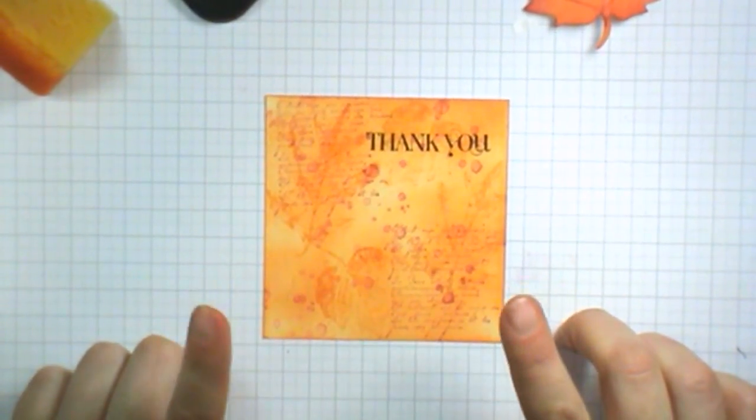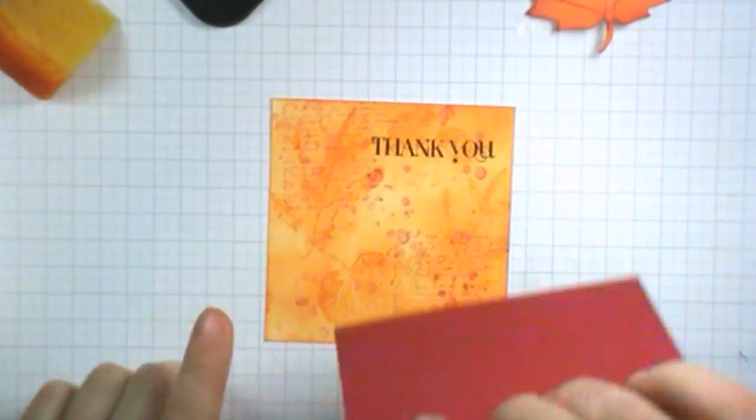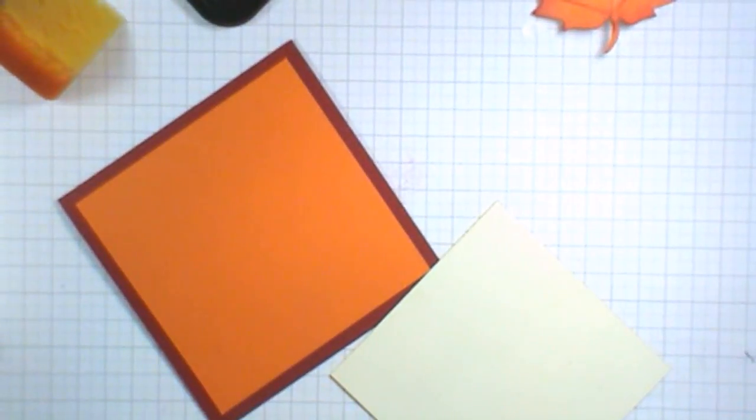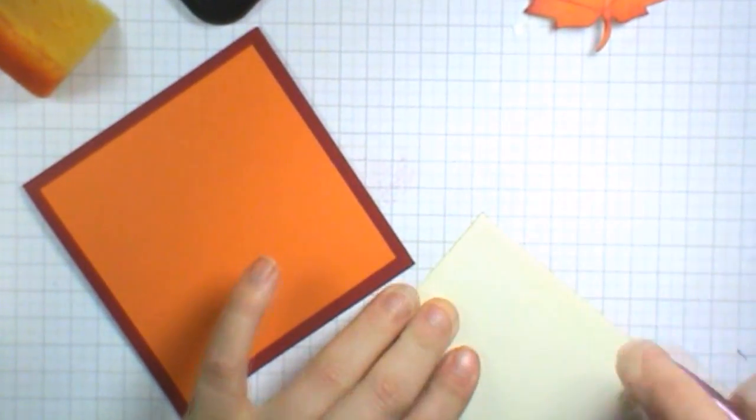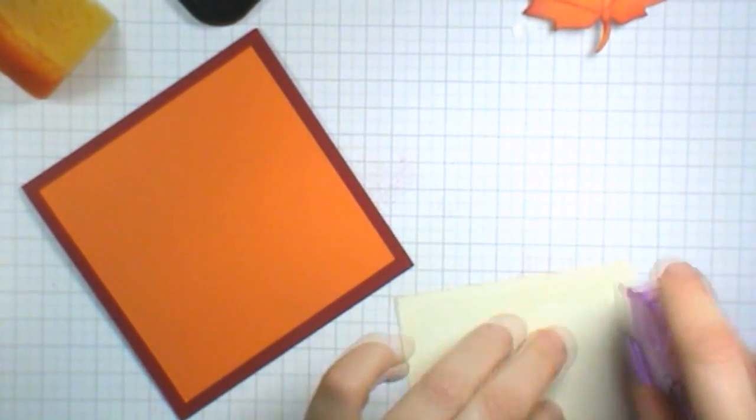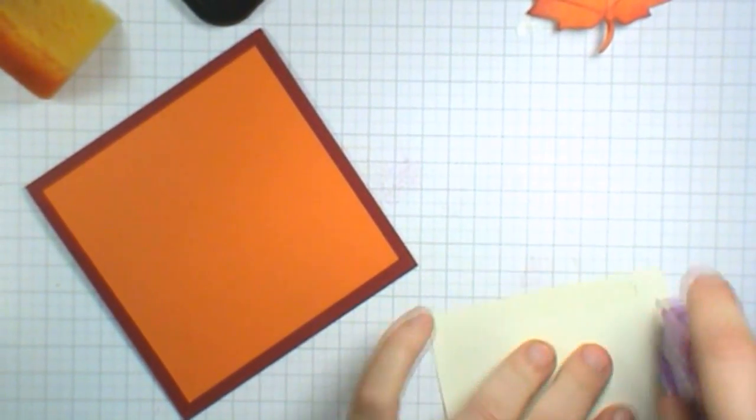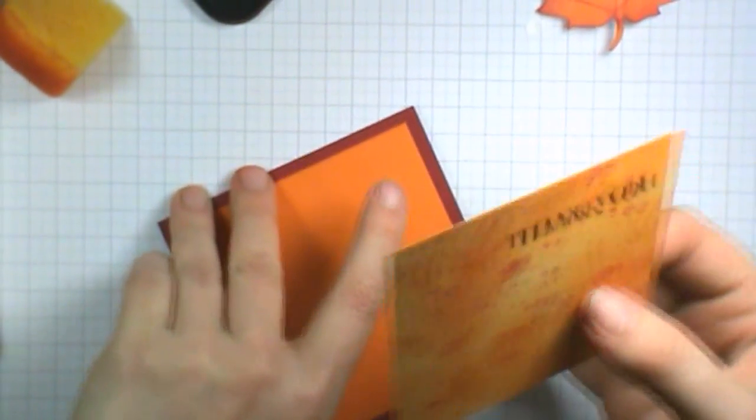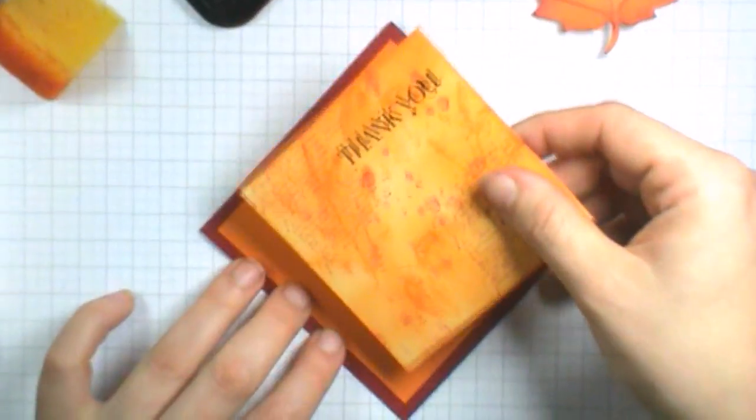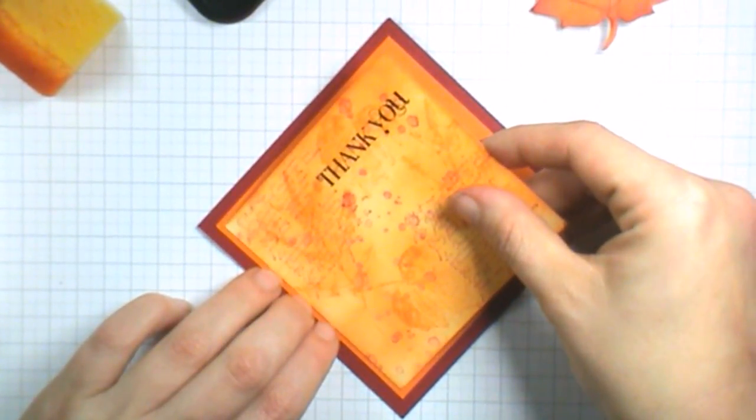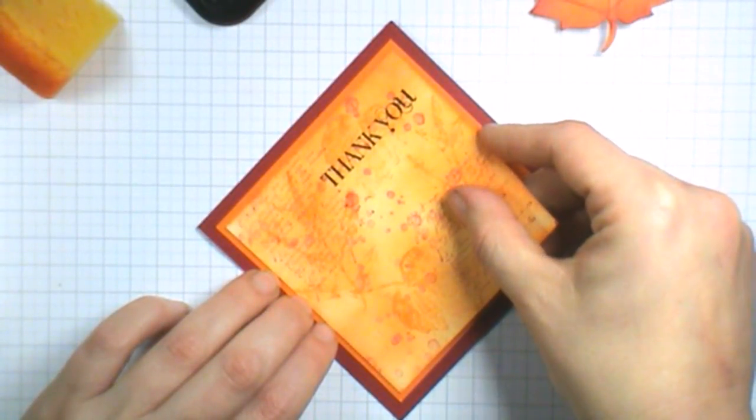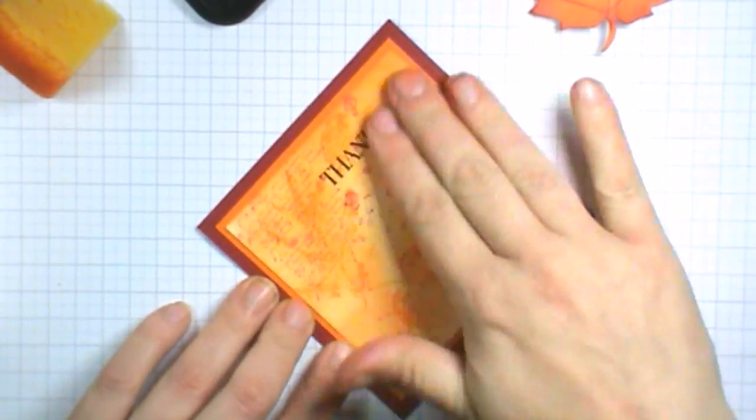We are now going to adhere this piece of vanilla cardstock down to the pumpkin pie on our card base.